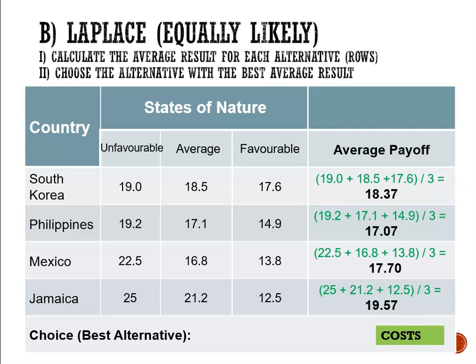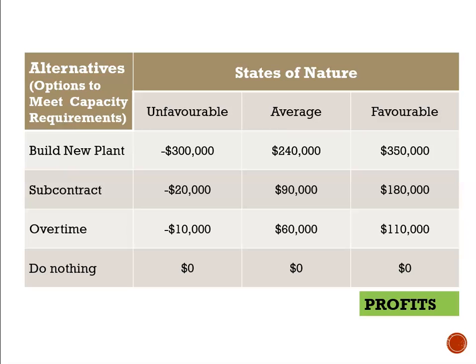We have now narrowed down the payoffs to a single cost per location. South Korea at a cost of 18.37 million, Philippines at a cost of 17.07 million, Mexico at a cost of 17.7 million, or Jamaica at a cost of 19.57 million. Of those choices, the lowest cost is Philippines, so a rational individual would now choose Philippines.